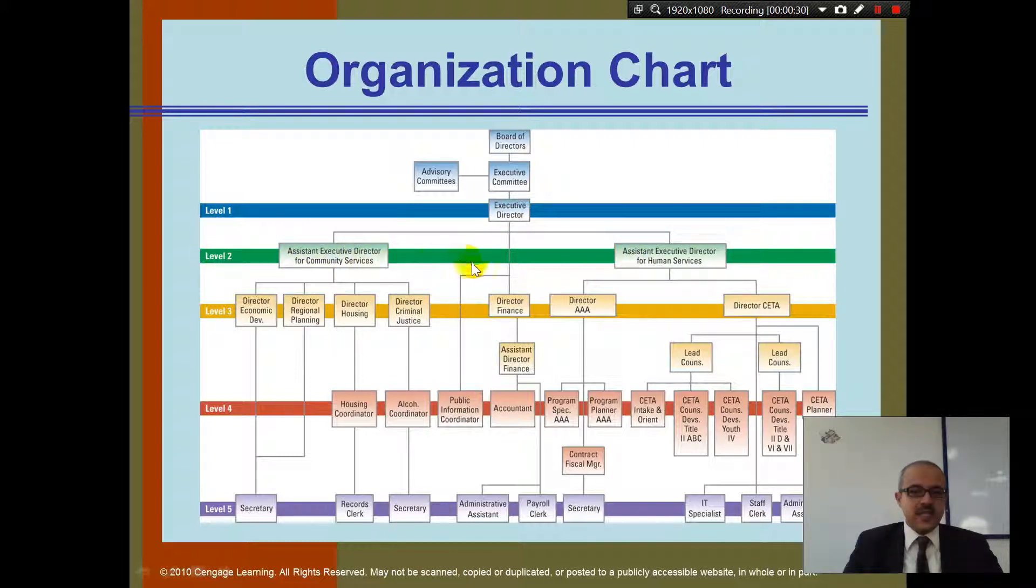Then we got the assistants. Level three we have directors here. Level four we have the coordinators, and level five. Are you guys okay with this organization chart? When you see this line, what does this line mean?